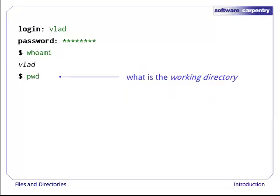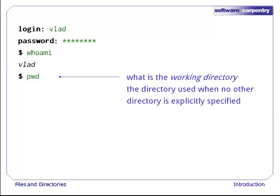Now that we know who we are, we can find out where we are using pwd, which stands for Print Working Directory. This is our current default directory, i.e., the directory the computer assumes we want to use, unless we specify something else explicitly.